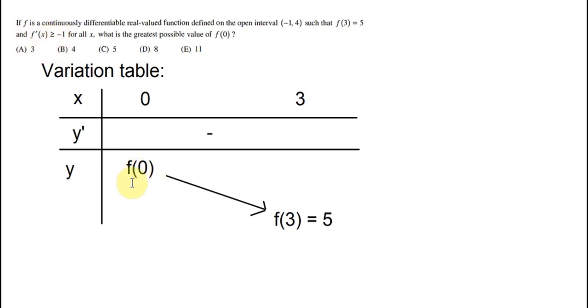We can get the greatest possible value of f(0). The most negative first derivative is -1.